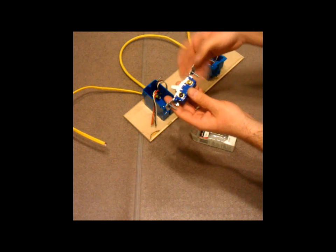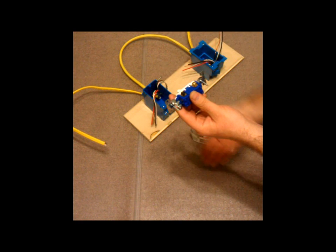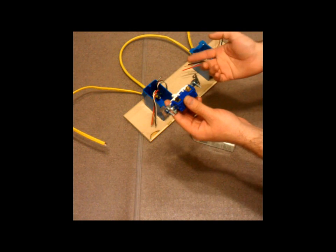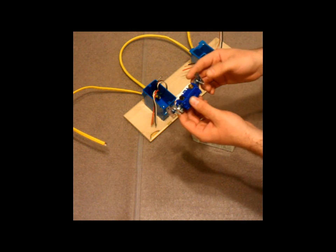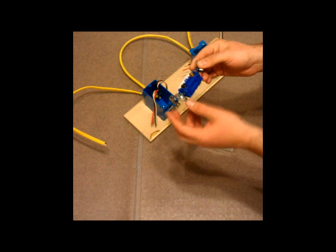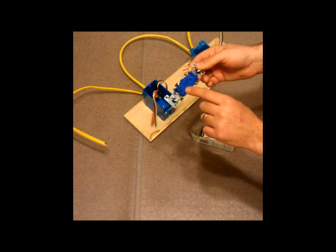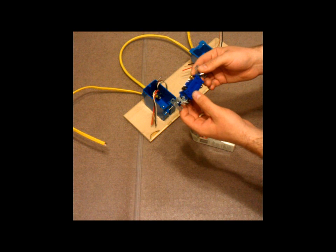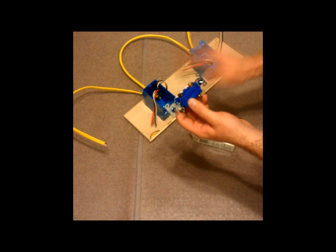Sometimes you'll find though on an older switch that somebody dropped the screw and they just put in a gold screw, so therefore you won't be able to tell by the color. You'll have to look here. In the event that you can't tell by the color, you get confused.